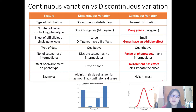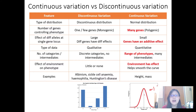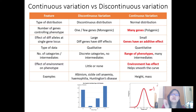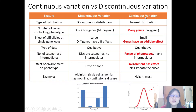So it's not distinct categories like A, B, or O. Instead, something like height or mass — the average height might be 177 cm, but you can have 177.1 or 177.01, with all these intermediates included in the curve. That's continuous variation versus discontinuous variation.